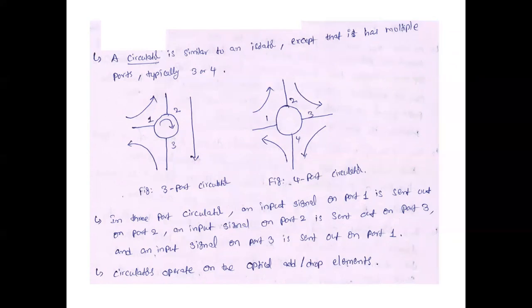What is the use of the circulator? Circulators are used to add or drop elements — that is, adding or removing devices in a network.